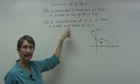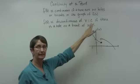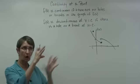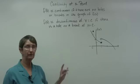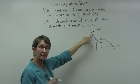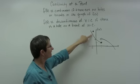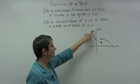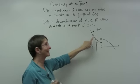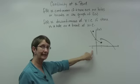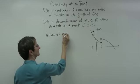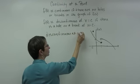f of x is discontinuous at a point x equal to c if there is a hole or a break at c. Looking at this graph, if I start on the leftmost part and follow it with my finger, when I get to this open dot, that's a hole. So if I want the value there, I have to jump up and back down — I have to go over the hole. So it's discontinuous at x equal to negative 1.